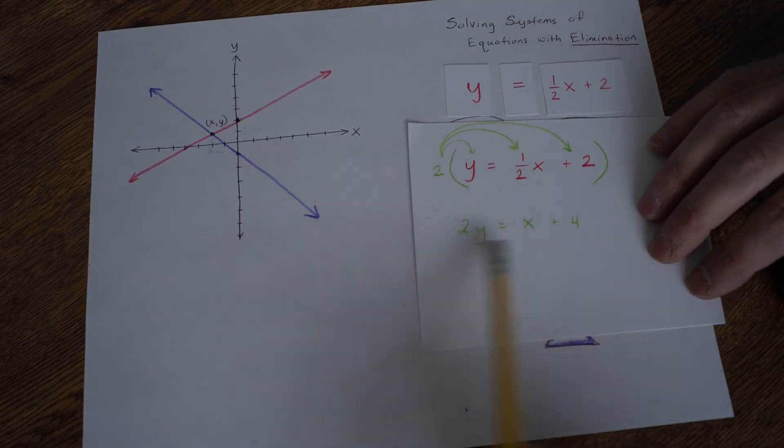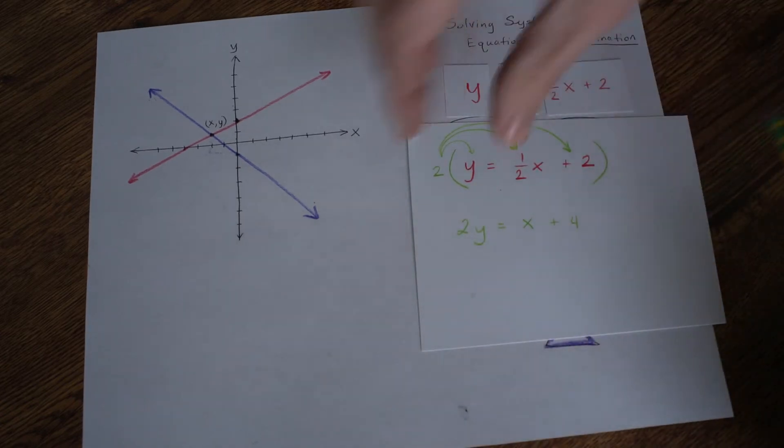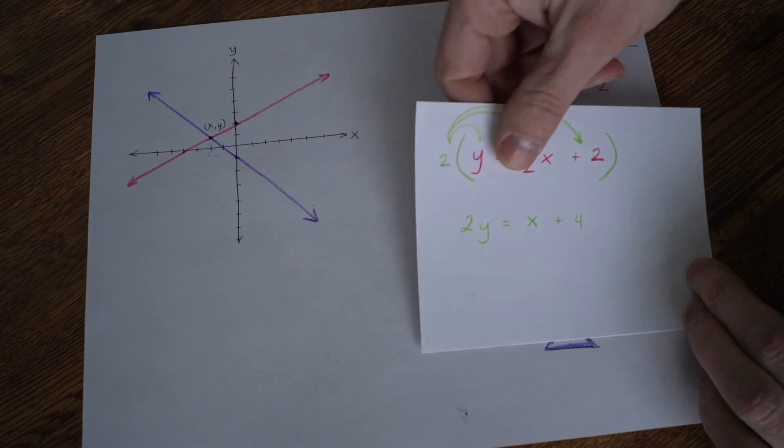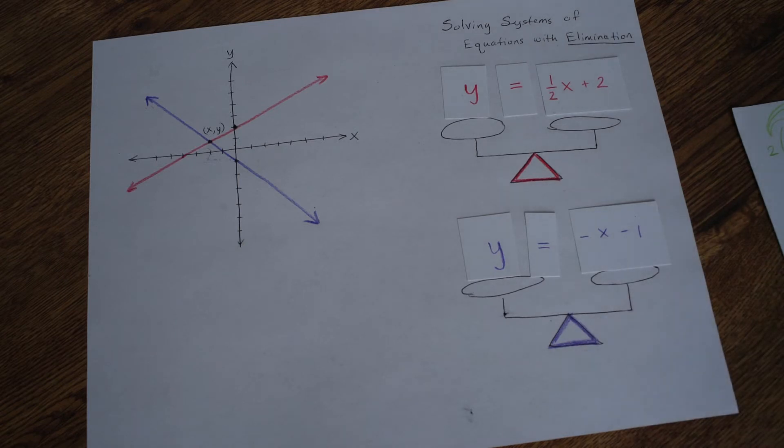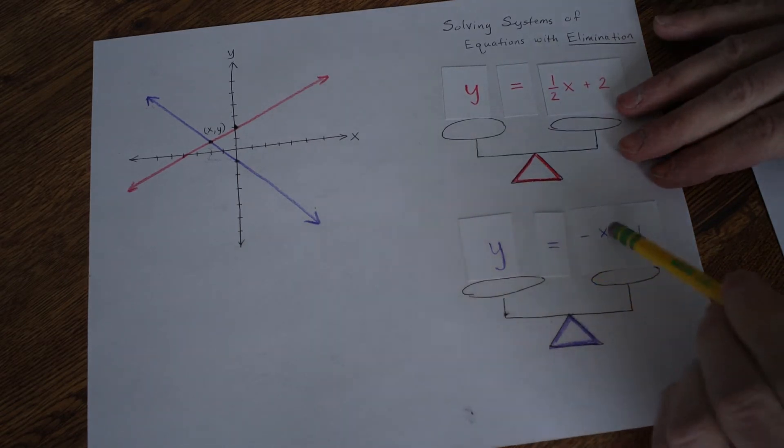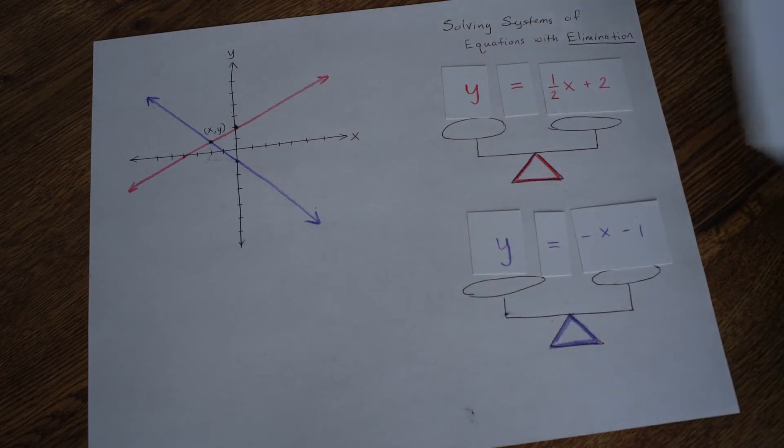It's kind of like 1 half or 4 over 8 is also 1 half. It's just an equivalent fraction there. So these are equivalent equations.